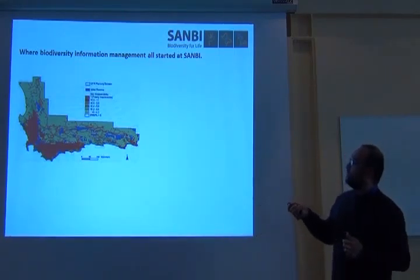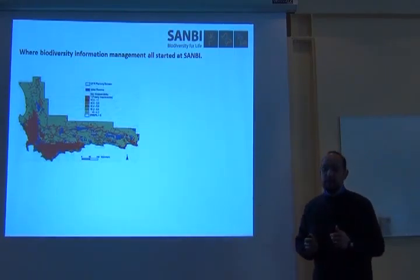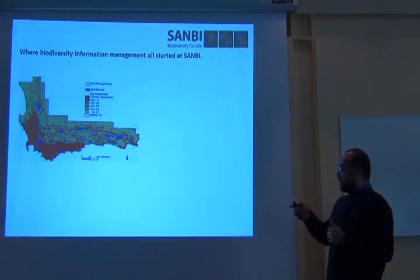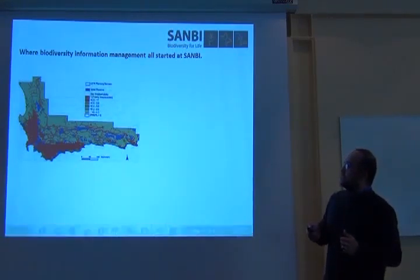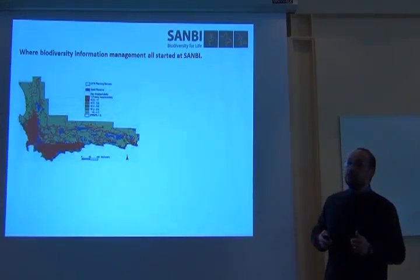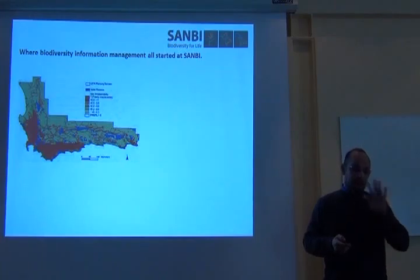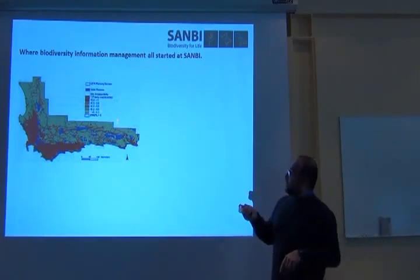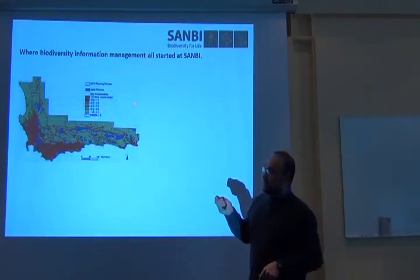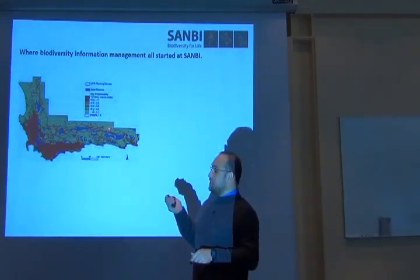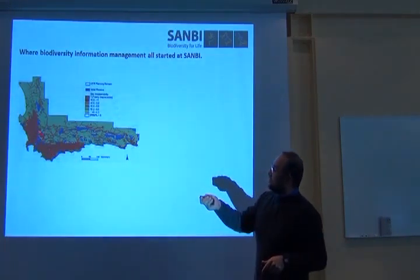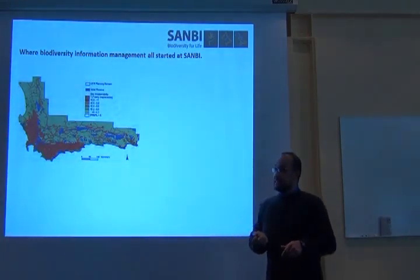One of the examples I can give is that all of the biodiversity data locked up in the herbarium cupboards was used for the first time to develop a conservation plan for the Cape Floristic region — and that's called the Cape 2000 map. My first job was to take this map to local governments and tell them why they need to conserve the red areas.